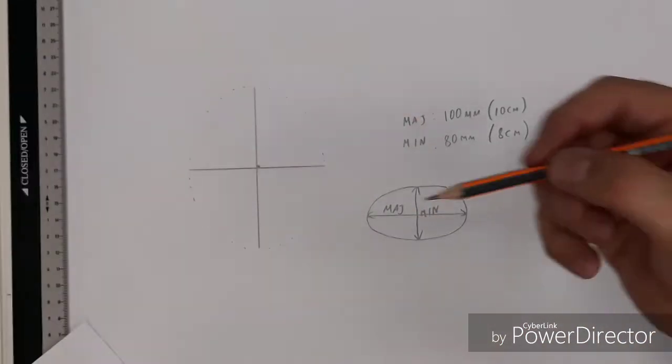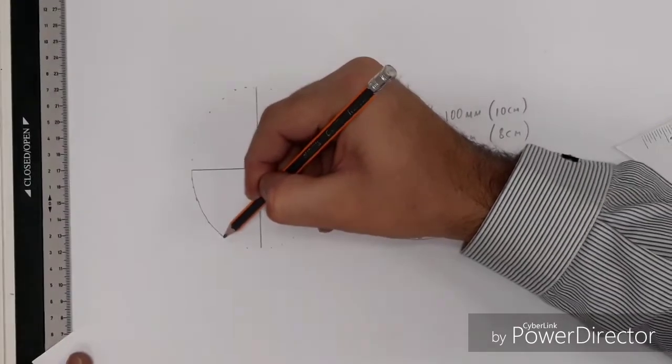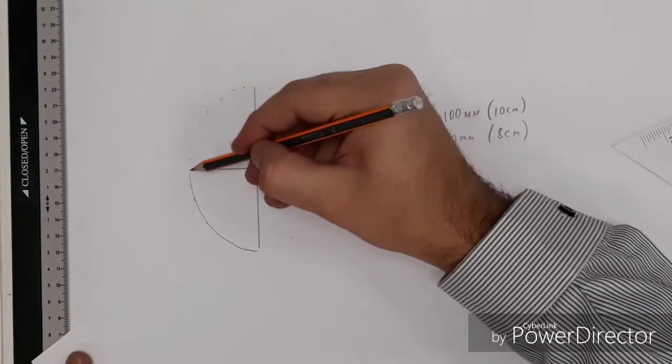There we go. You can probably see it there already. And all you do, you join your points up, and there you have your perfect ellipse.